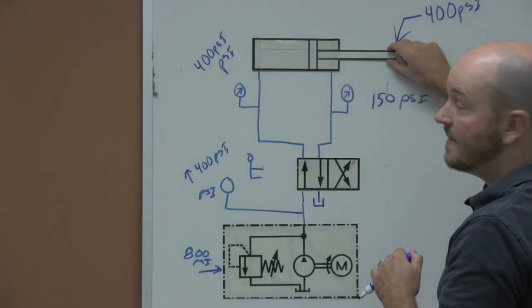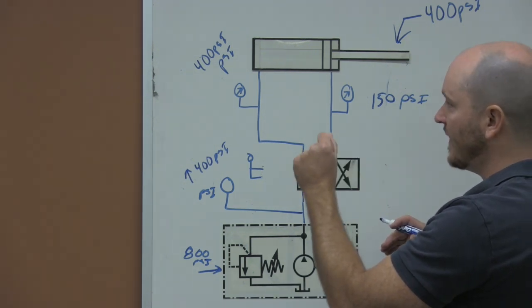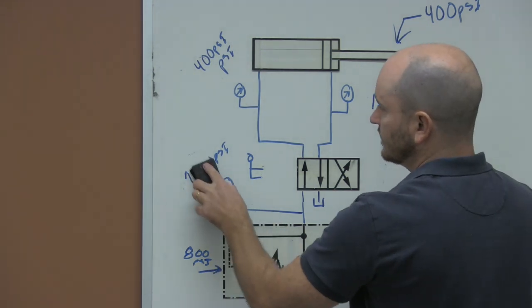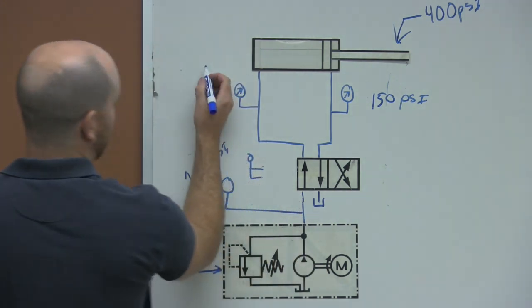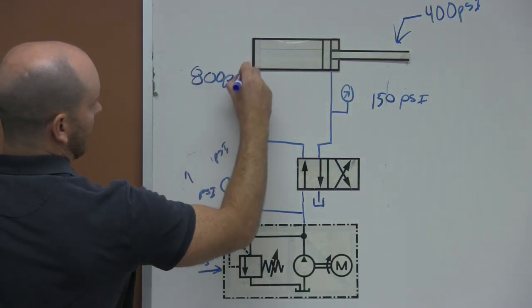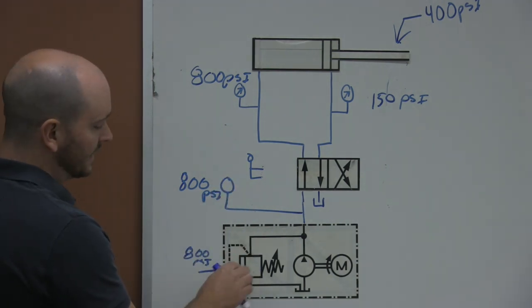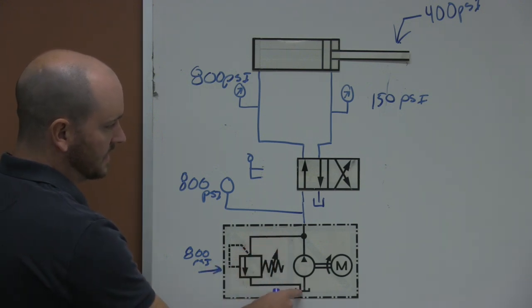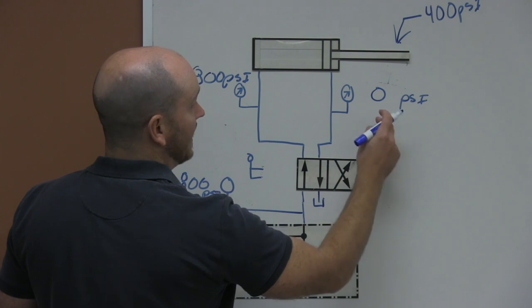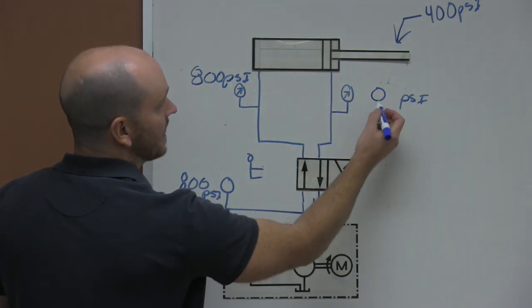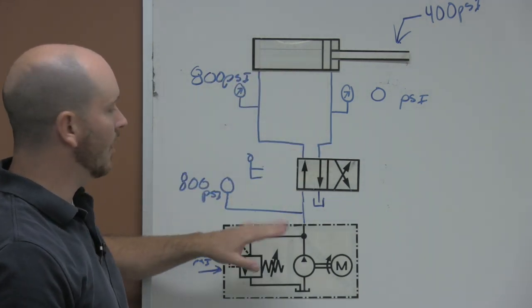The cylinder extends all the way out. As soon as it gets fully extended, flow stops. The instant flow stops, pressure starts to rise — here and here — going up until it reaches 800 psi. At 800 psi the relief valve opens and all the oil is dumped back to tank. The pressure on the B port is now zero because there's no oil trying to make its way back to tank.